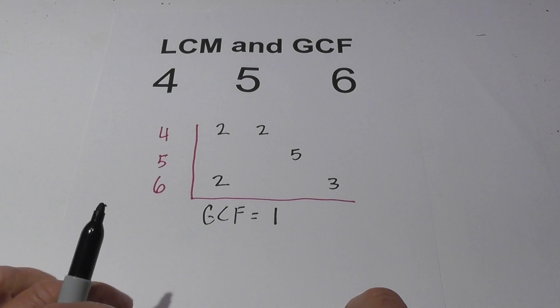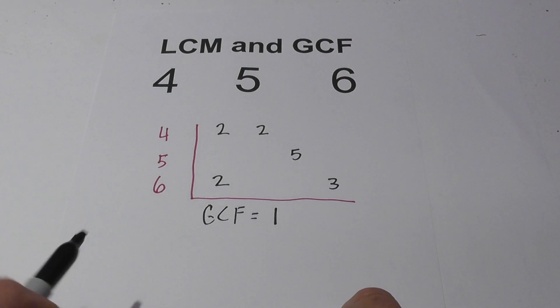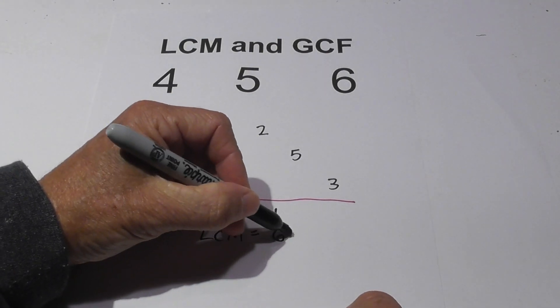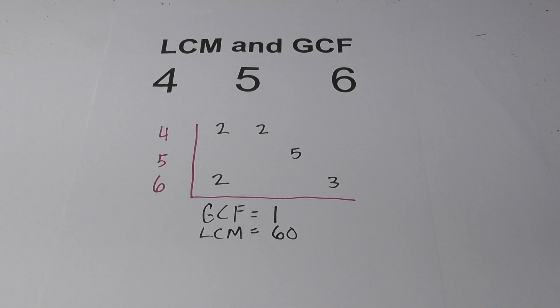I hope this helps in finding the LCM and GCF of 4, 5, and 6. The LCM equals 60. Thanks for watching, and Moo Moo Math uploads a new math and science video every day. Please subscribe and share.